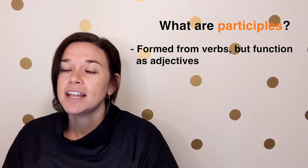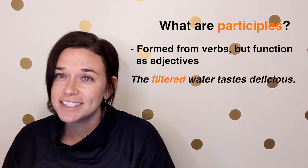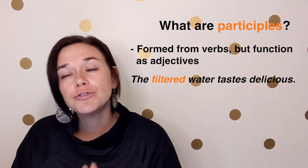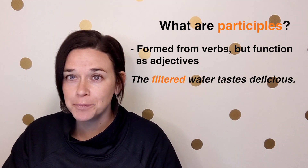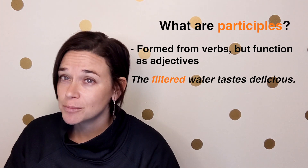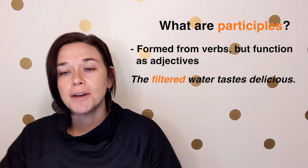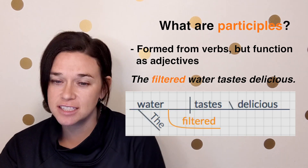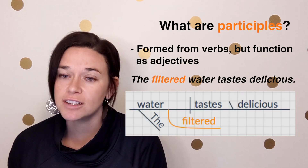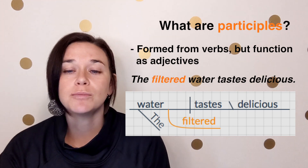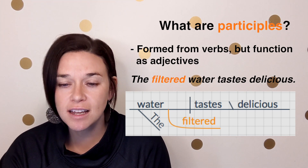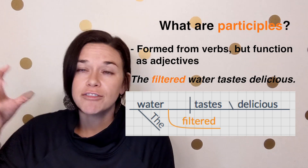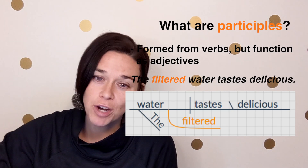Let's look at some examples. The filtered water tastes delicious. Filtered is a participle. It's formed from the verb filter, but it's not acting as a verb. It's acting as an adjective, modifying the noun water. Here is a sentence diagram of 'the filtered water tastes delicious,' and the word filtered is coming off of the word water. This helps us see that filtered is modifying water.